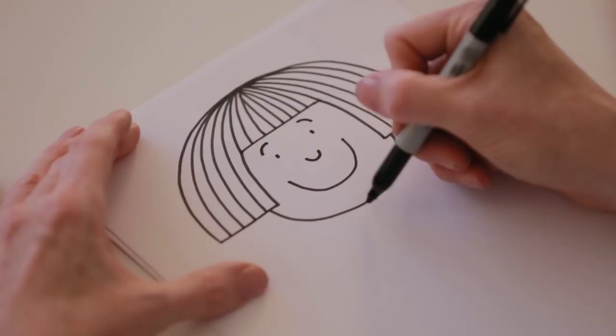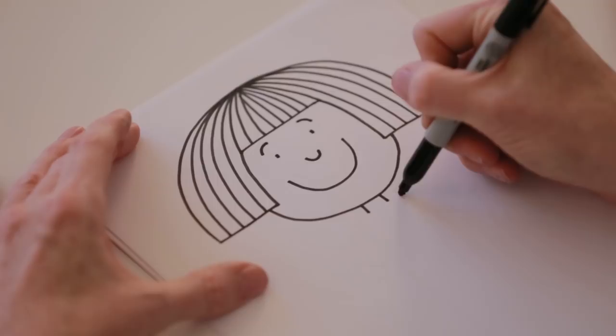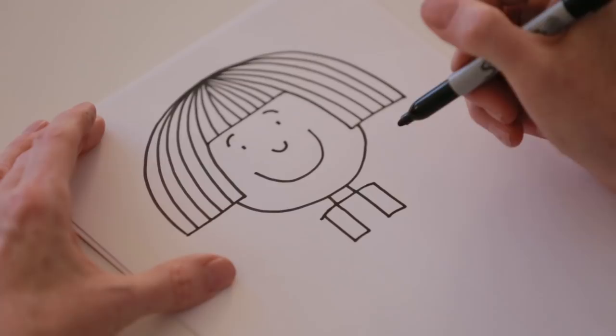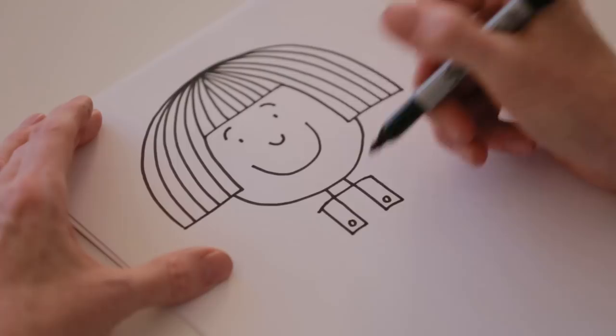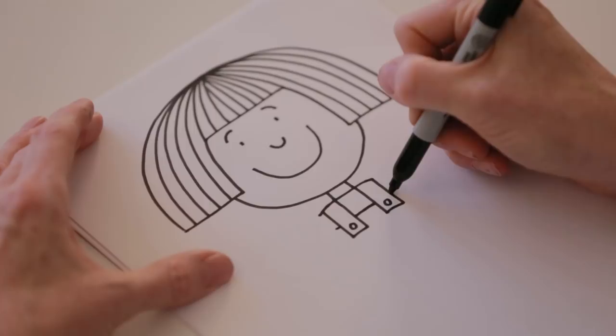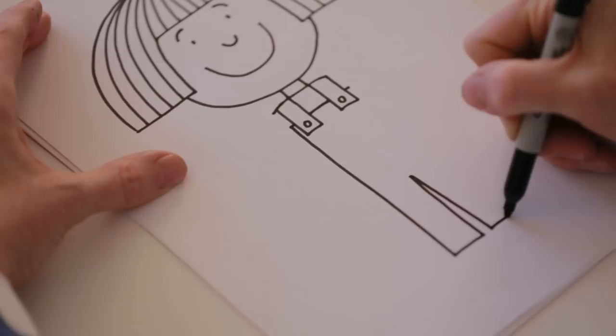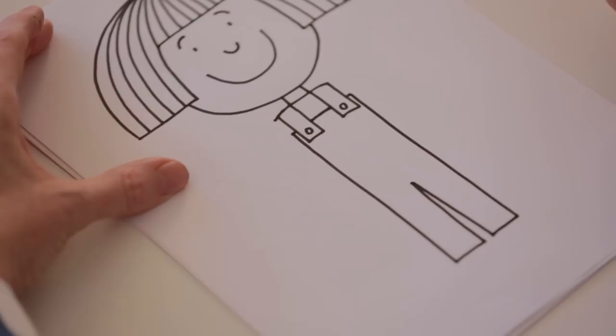And now I can draw her neck. And the top of her dungarees. Two straps. Two poppers in the straps. A line at the top of her dungarees. Make it a little longer either side. And then go straight down to her feet. And you can draw the rest of her dungarees like that.